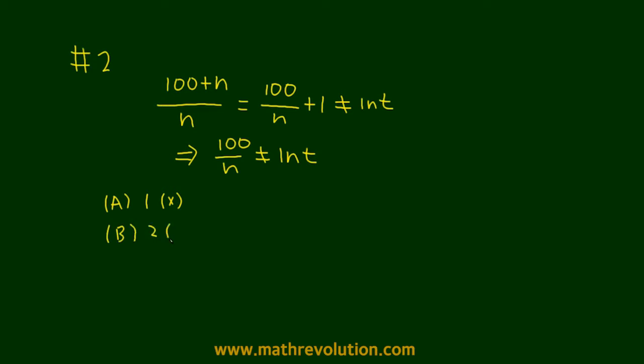Choice D is 4, and 100 is divisible by 4, right? 1, 2, and 4, 100 can all be divided by these numbers. And choice E, 5, 100 is divisible by 5.